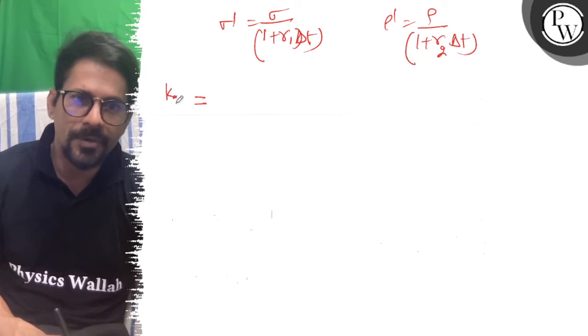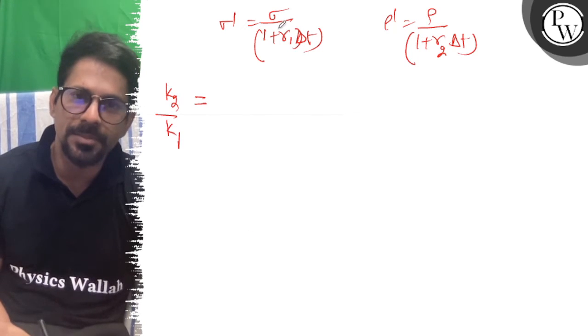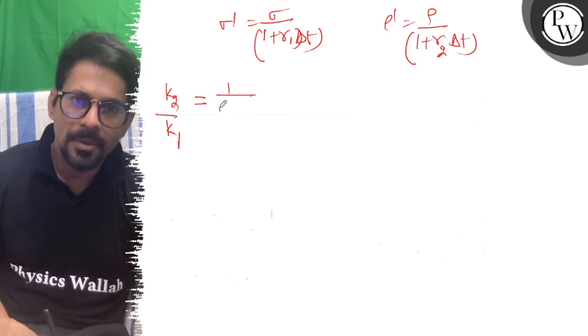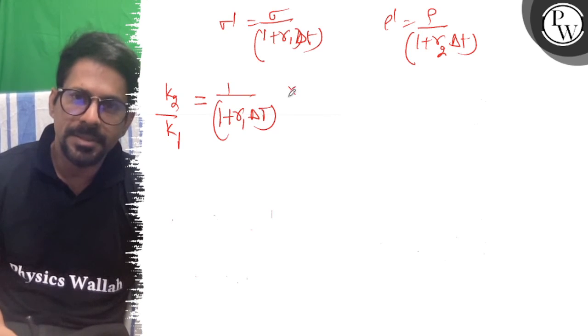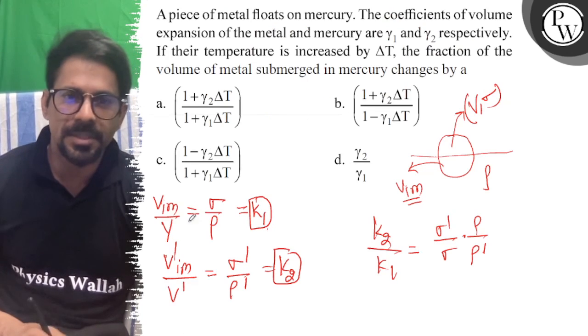According to the value of K2 upon K1, sigma dash upon sigma is 1 upon 1 plus gamma 1 del T. And this is 1 plus gamma 2 del T. So if we look at the answer choices.